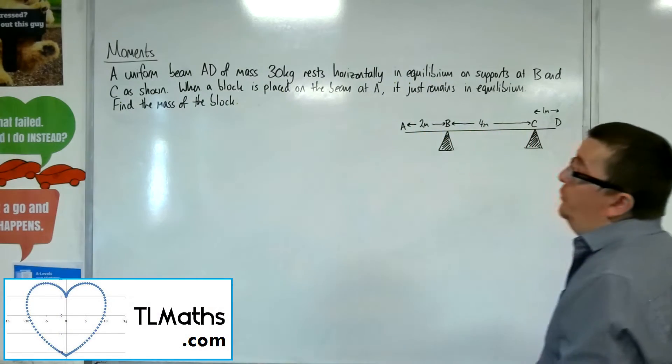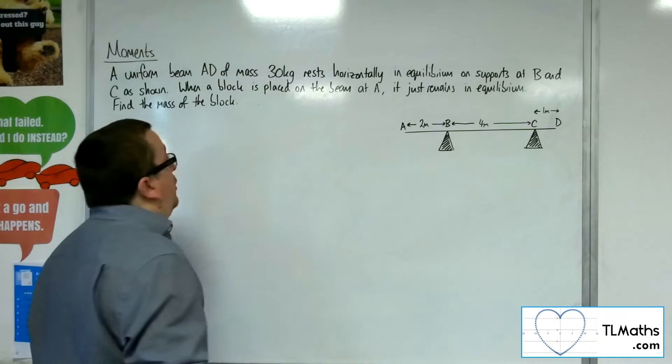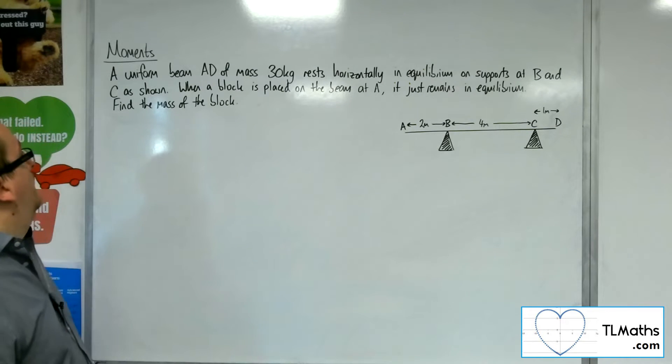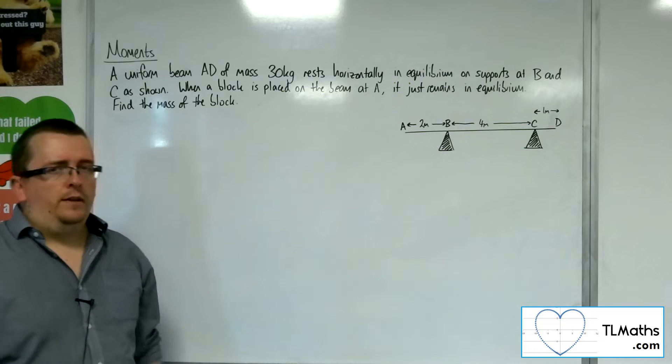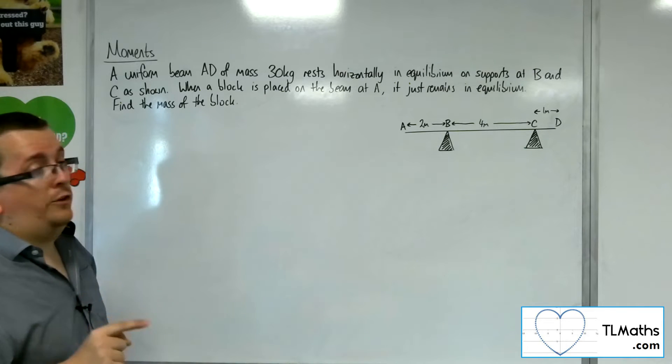In this video we've got a uniform beam AD of mass 30 kilos resting horizontally in equilibrium on supports at B and C as shown. When a block is placed on the beam at A, it just remains in equilibrium. Find the mass of the block. So that means it's on the point of tilting when the block is placed at A.